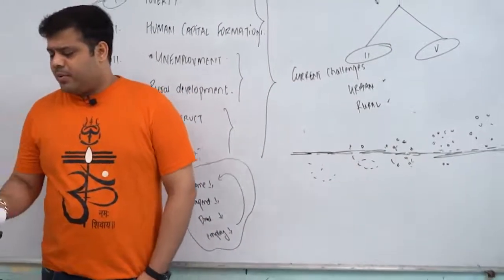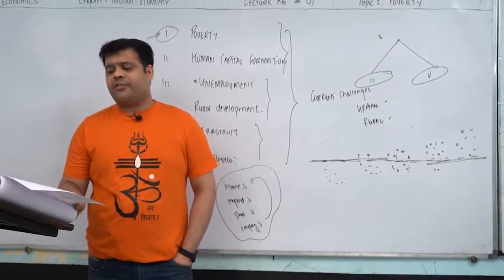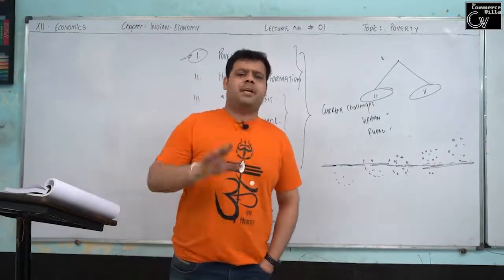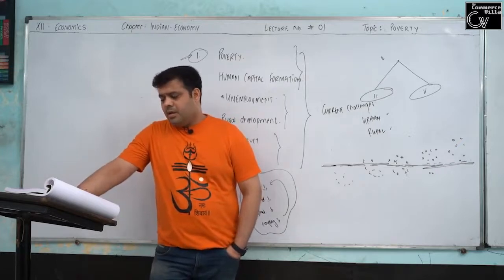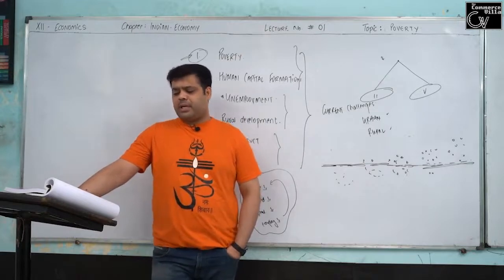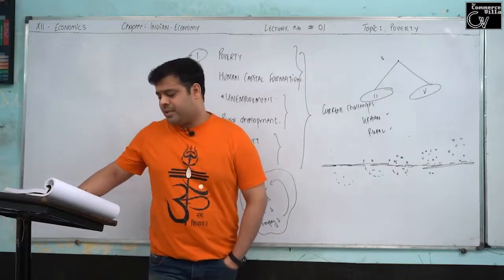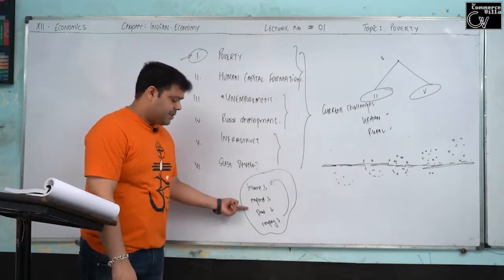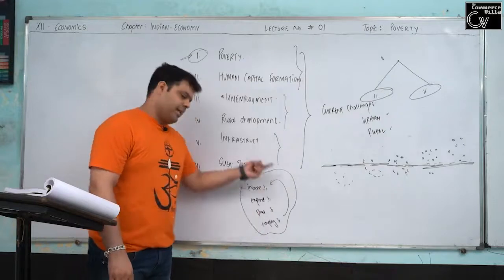The vicious circle of poverty implies that poverty is the cause of poverty. There are many vicious circles: poverty means low production, means low income, means low demand, means low capital, means low investment, means low production again. Alternatively: income is less so expenditure is less; expenditure is less so production is less; production is less so employment is less; employment is less so income is less.